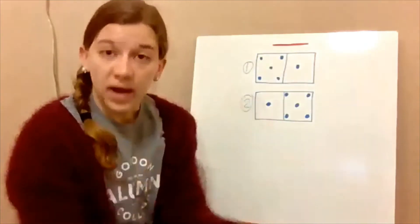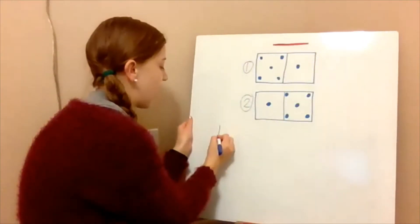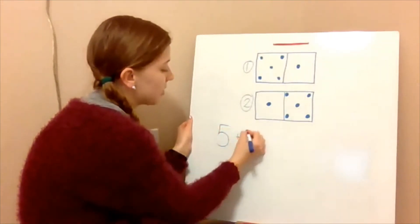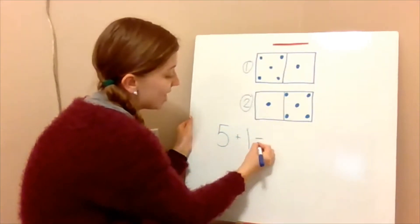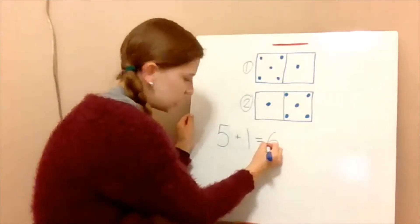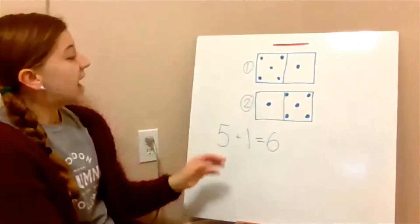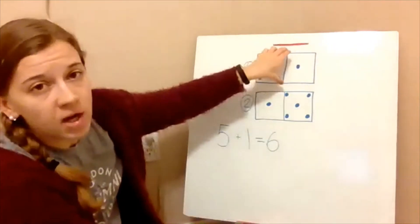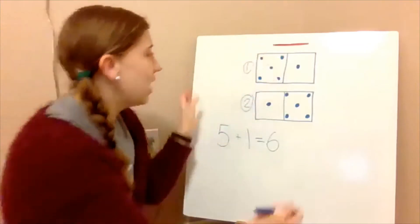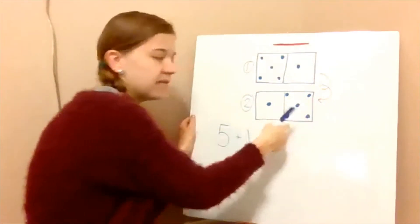So the way we can write that — our addition sentence — we can say five plus one equals six. Now, if I took this domino and flipped it like this, the domino would look like this now.